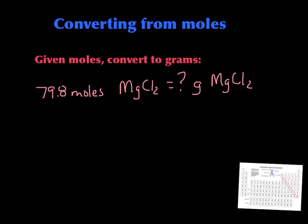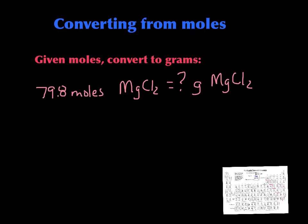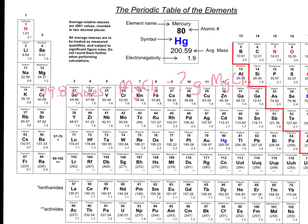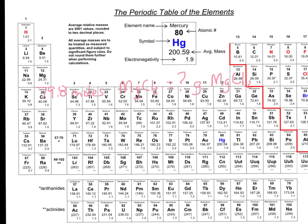Just a little reminder that when we're given moles and we have to convert to grams, we always have to go to our periodic table. You can see on this one we have 79.8 moles of magnesium chloride, and if we wanted to change that to grams, if this were just a one-step deal where we're changing over to grams, then we would look at our periodic table. We would look at our molar masses. Here's magnesium right over here.